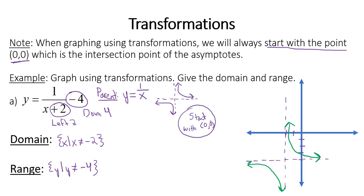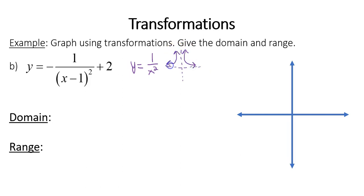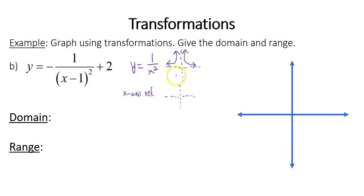That's one example of graphing using transformations, and now one more. My function here — since you see a quantity squared in the denominator — uses the parent function 1 over x squared. Drawing a quick sketch: you have your asymptotes with curves in the top right and top left region. Priority one is the negative sign out front, which represents an x-axis reflection. Let's think about what this x-axis reflection does to the graph.